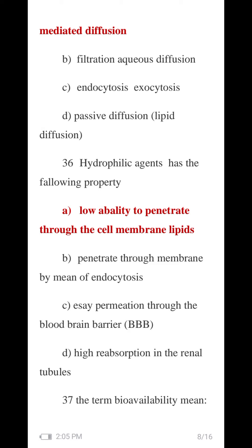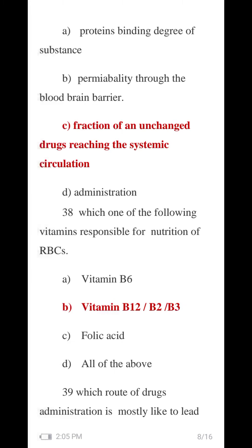Question 37: The term bioavailability means — the rate and the fraction of the drug that reaches systemic circulation. Options include: the rate, the fraction, both A and B. The bioavailability is defined by the rate or the fraction — both A and B — and the correct answer relates to systemic circulation.